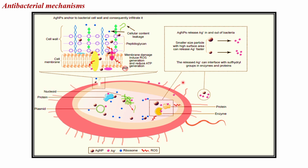Silver nanoparticles show stronger antibacterial effects on gram-negative bacteria due to their thinner cell walls (3–4 nanometers) compared to gram-positive bacteria (30 nanometers). The negative charge of bacterial cell membranes attracts the positively charged silver nanoparticles, enhancing their attachment and antibacterial activity. Once inside the bacteria, silver nanoparticles interact with cellular structures and biomolecules, disrupting functions and leading to cell death. They also denature ribosomes, inhibit protein synthesis, and interfere with enzymes like beta-galactosidase.